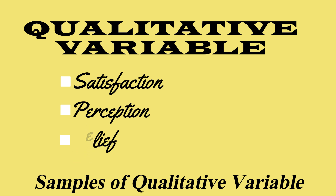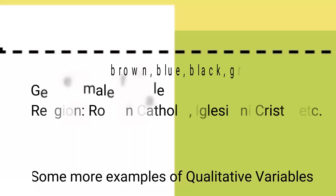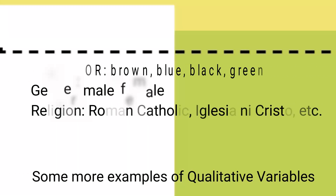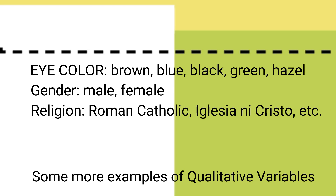For perception: positive and negative. Other examples of categorical variables include eye colors (black, blue, green, brown, hazel), gender (male and female), religion (Roman Catholic, Iglesia ni Cristo, Born Again Christian), and many more. For a qualitative study, the title should contain the concept that you want to explore, investigate, or explain — unlike in quantitative research where we measure variables. In qualitative research, we focus on deeply understanding the conceptual or categorical variable.